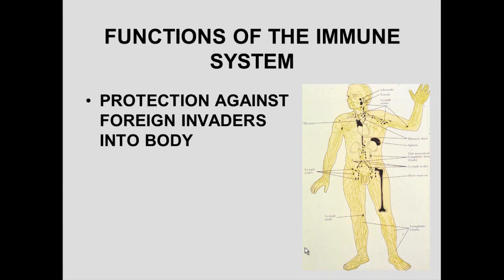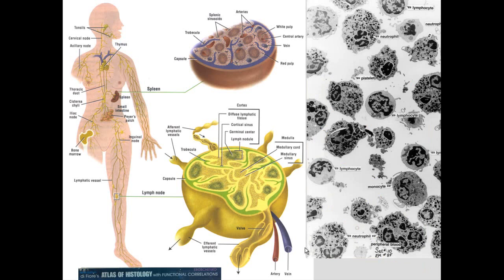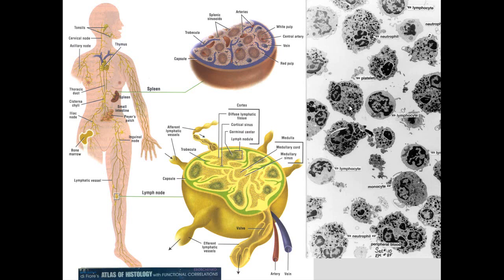The immune system tries to prevent foreign invaders from taking up residency in our bodies and to maintain a largely germ-free internal environment. To accomplish this there are a host of organs: lymph nodes throughout the body, Peyer's patches in the intestine, bone marrow, spleen, thymus, tonsils, and various lymphoid organs involved in mounting the immune response. The cells largely involved are white blood cells — lymphocytes, neutrophils, and macrophages.